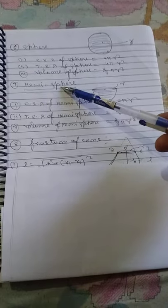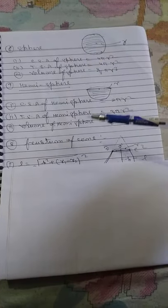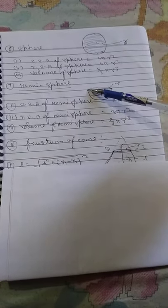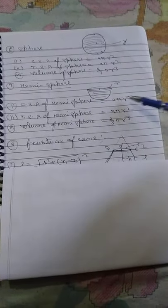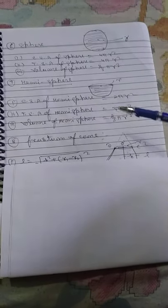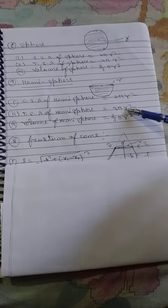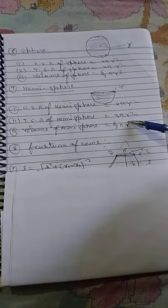The last solid is the hemisphere. A hemisphere is formed by cutting a sphere in half; the bottom part is the hemisphere and the top becomes a circle. The CSA of a hemisphere is 2πr². The TSA is CSA + base area = 2πr² + πr² = 3πr². The volume of a hemisphere is (2/3)πr³. This is how we solve all these problems. Thank you.